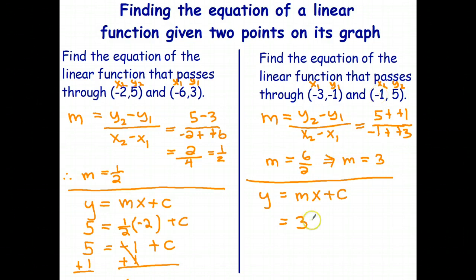So x is going to be negative 1. I'll use the brackets for multiply. c we don't know. And when x is negative 1, y is 5. Okay, let's go ahead and solve for c.